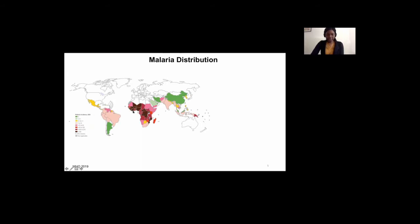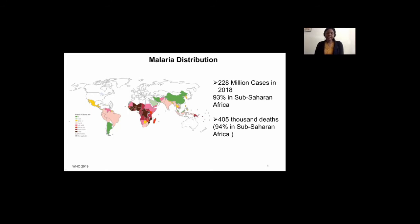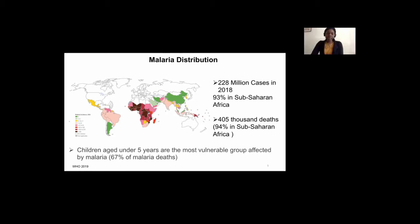This map shows the distribution of malaria in the world, and the darker the color, the heavier the disease burden. Most of the burden of malaria is in sub-Saharan Africa. In 2018, an estimated 228 million cases of malaria were reported, of which 93% occurred in the sub-Saharan African region. Roughly 405,000 people died from malaria in 2018 and 94% of those deaths were in sub-Saharan Africa. The people who suffer most from malaria are children under the age of five — they are the most vulnerable group and constituted 67% of malaria deaths in 2018.